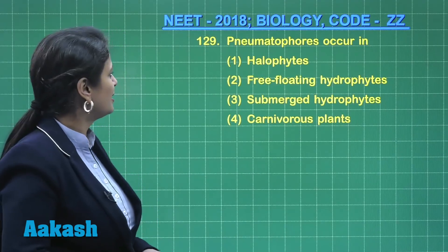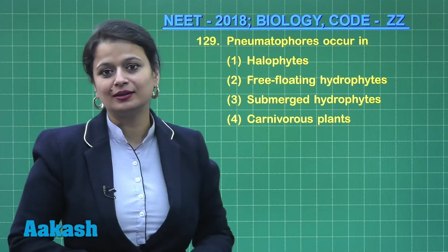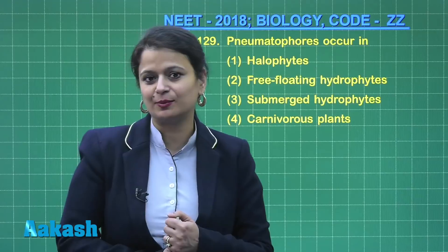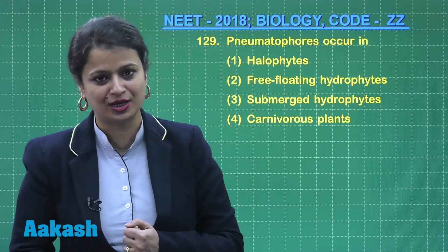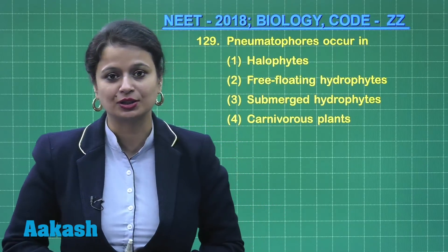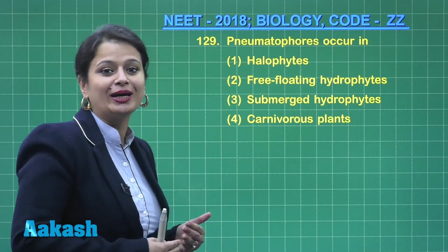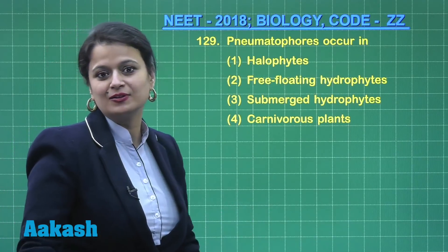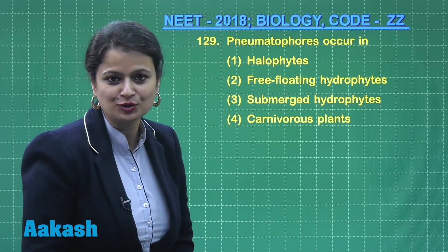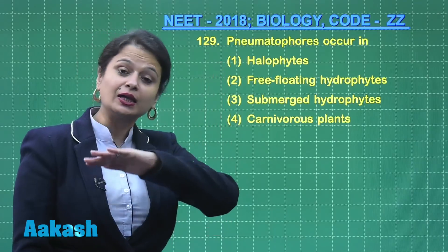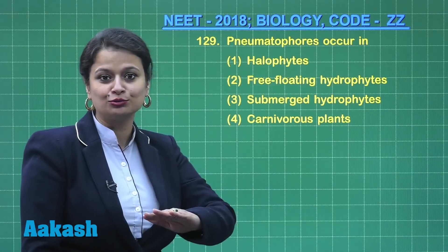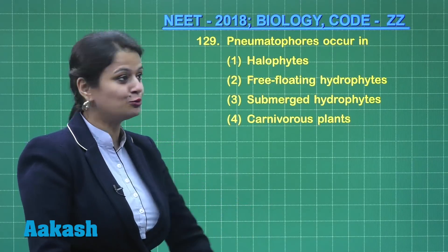Question number 129: Pneumatophores occur in — pneumatophores are respiratory roots present in halophytes. Halophytes are plants which grow in marshy areas where water content is high and there is high salt concentration, which decreases soil aeration. So how do the roots respire if soil aeration is less? Some roots come out of the soil — they become negatively geotropic — just for the purpose of aeration.